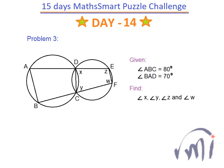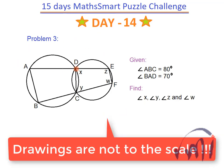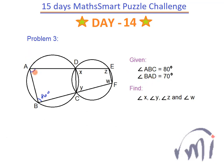This was the third problem which we need to solve. We are given that angle ABC is equal to 80 degrees, and angle BAD is 70 degrees. We have to find the values of X, Y, Z, and W. The sum of opposite angles in a cyclic quadrilateral is 180 degrees, so if angle ABC is 80, the opposite angle will be 100 degrees, and the angle opposite to BAD will be 110 degrees.